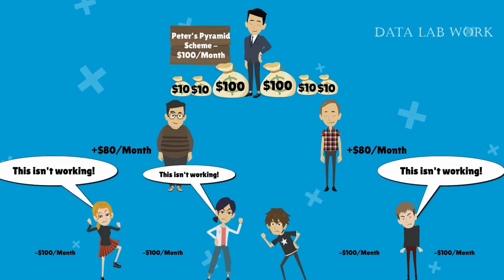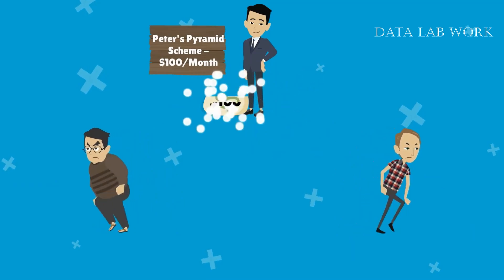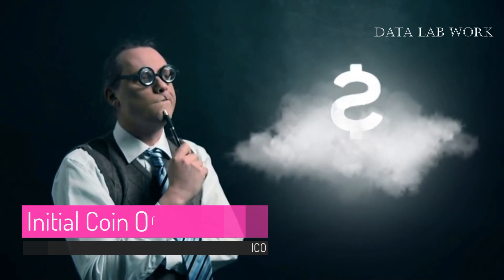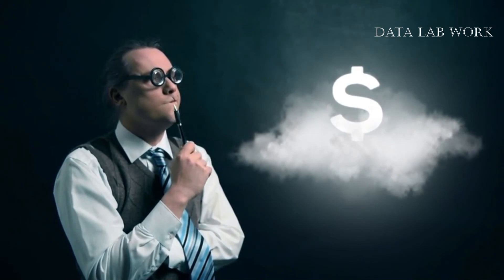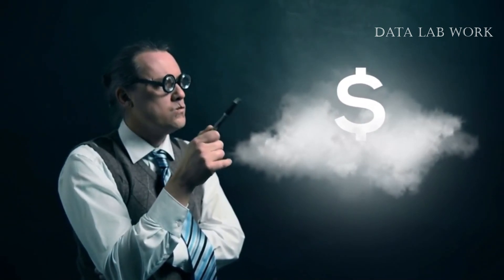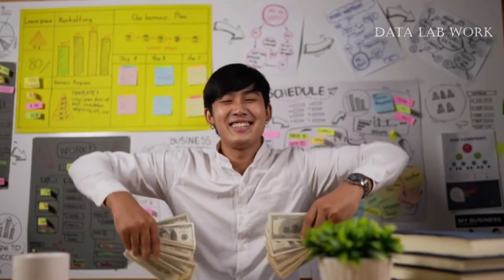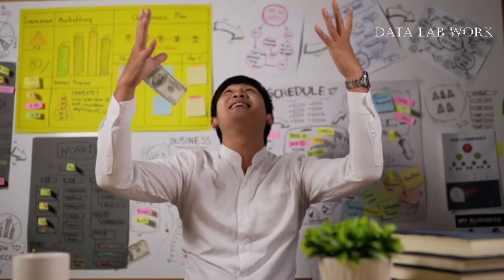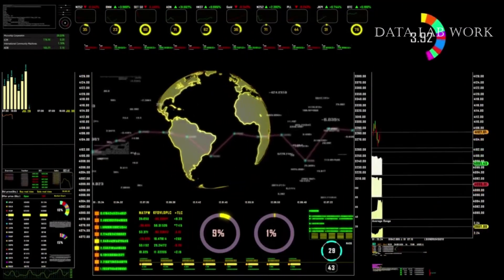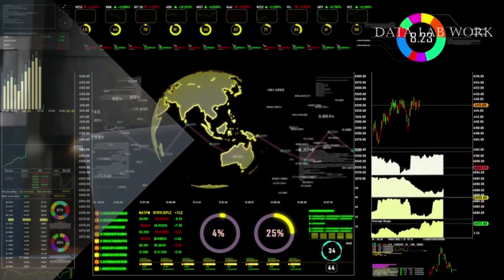In a Ponzi scheme, early investors are paid returns from the investments of later participants rather than from profits. These schemes are unsustainable and eventually collapse, leaving the last investors out of pocket. Then there are fake initial coin offerings, or ICOs. In a fake ICO, scammers create a flashy website and a white paper full of technical jargon promising incredible returns, collect money from investors, then disappear — never to be heard from again. Another popular scam is the pump and dump scheme, where a small group pumps money into a low-value coin to drive up its price, then dumps their holdings, leaving other investors in the lurch.